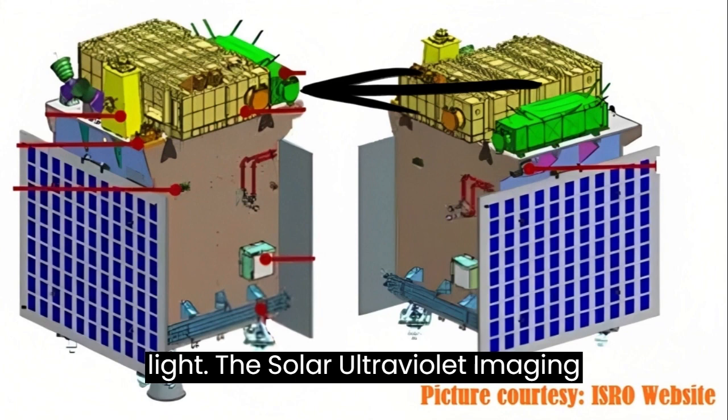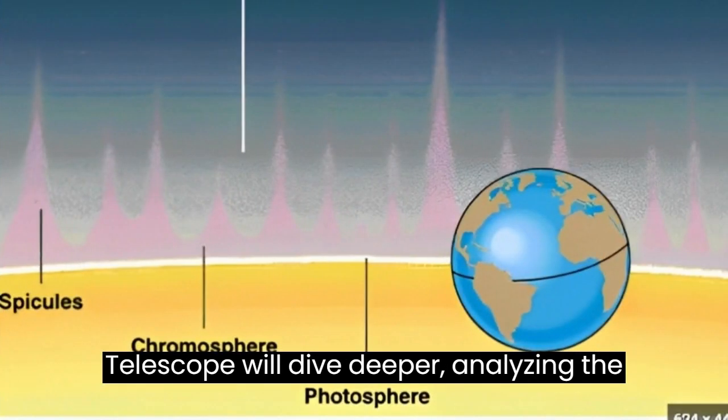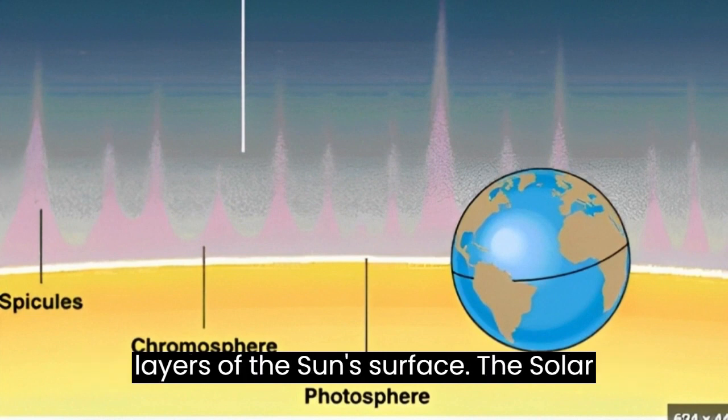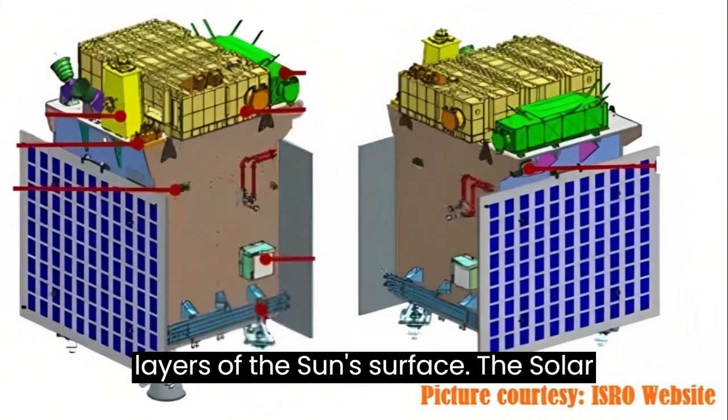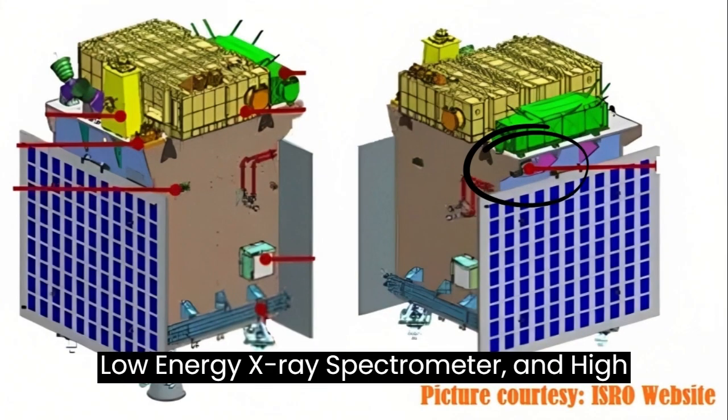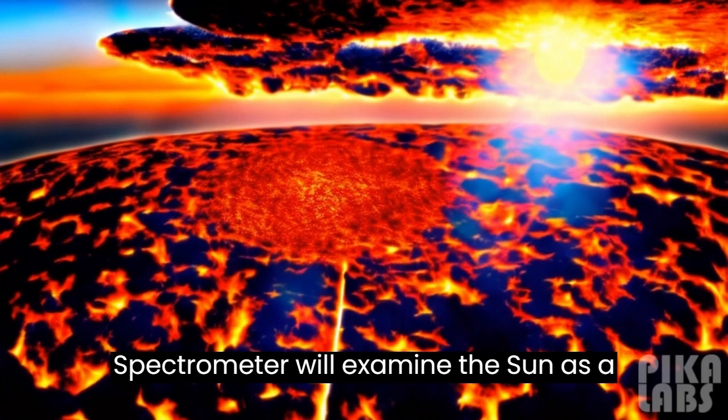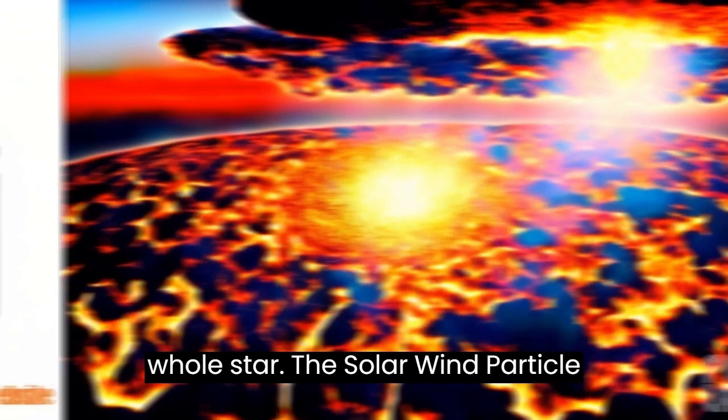The solar ultraviolet imaging telescope will dive deeper, analyzing the photosphere and chromosphere, two deeper layers of the sun's surface. The solar low energy x-ray spectrometer and high energy L1 orbiting x-ray spectrometer will examine the sun as a whole star.